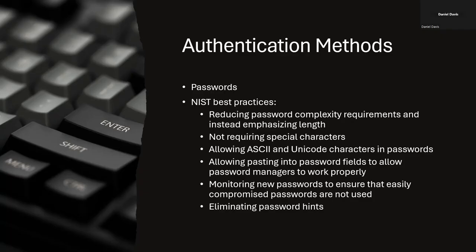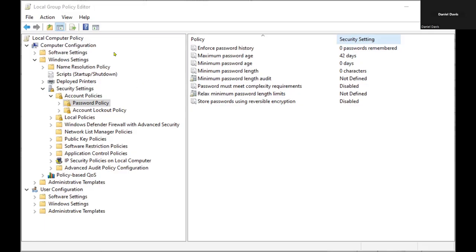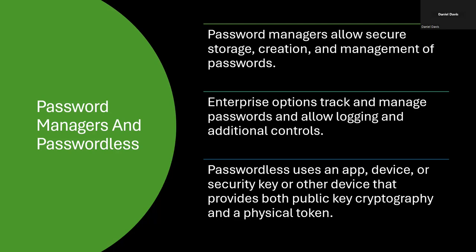We're going to cover some authentication methods, starting with the most common: passwords. This is a quick list of best practices provided by NIST, and a screenshot from a Windows machine in the local group policy editor setting the password policy. We'll also quickly cover password managers and passwordless authentication. Password managers allow secure storage, creation, and management of passwords. Passwordless authentication usually involves some kind of app, device, or security key that takes care of authentication for you, so no password is required.